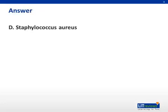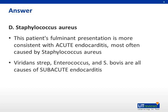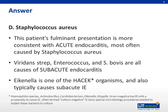The answer is D, Staph aureus. Staph and strep account for the vast majority of cases of endocarditis, but acute endocarditis is more likely to be caused by Staph aureus. This patient's fulminant presentation is more consistent with acute endocarditis. Viridans strep, enterococcus, strep bovis, and Eikenella are all causes of subacute endocarditis. Eikenella is one of the HACEK organisms, sometimes referred to as culture-negative, although it is important to note that the HACEK organisms do grow in culture — they just require special nutrients. They will be reviewed further when we discuss common pathogens of endocarditis.